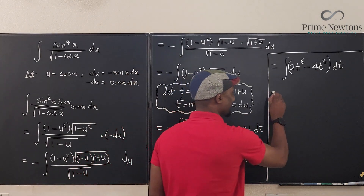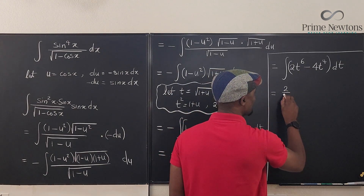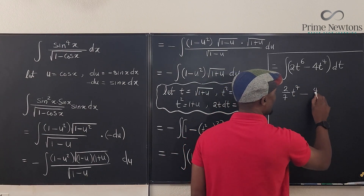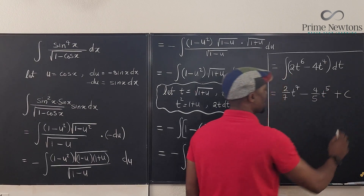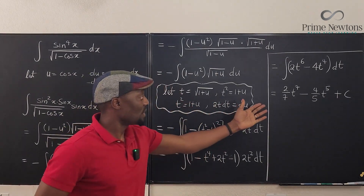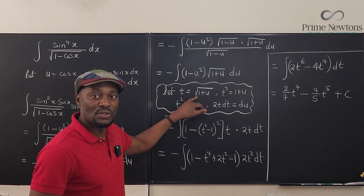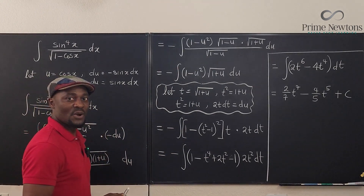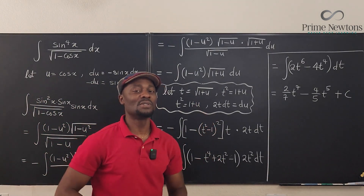Now we integrate: this gives 2 over 7 times t to the seventh minus 4 over 5 times t to the fifth plus C. All we have to do is recall what t represents: t is the square root of 1 plus u, and u represents cosine x.